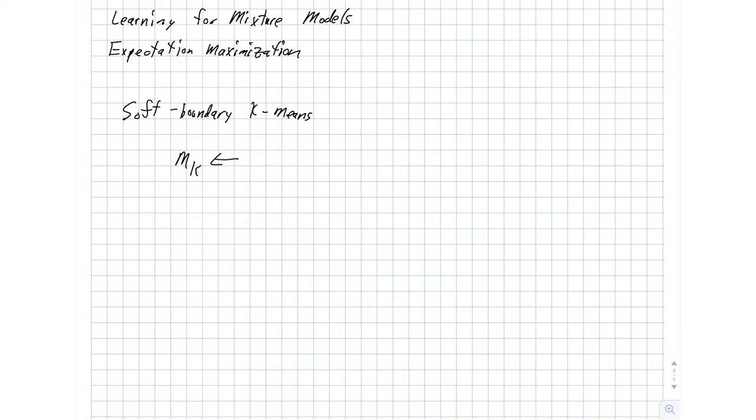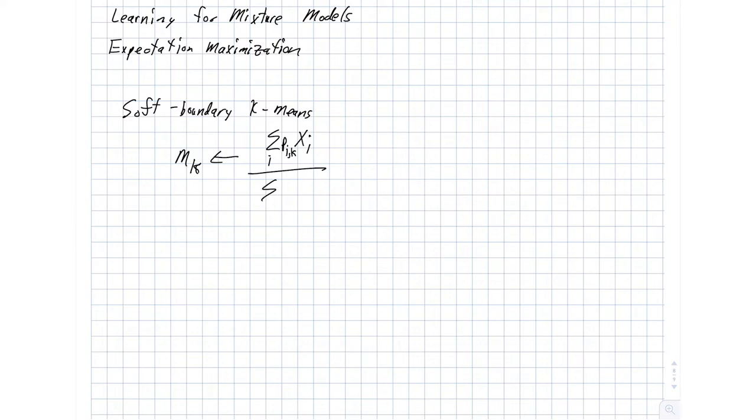So mean for cluster k is just a weighted sum of the points in that cluster. This is a sum over all of the points, and the weighting is based on our p_ik. And then that's divided by just the sum of our p_ik's. So in some sense, you can think of this as just counting the number of samples in the cluster, except some don't count as much as others.